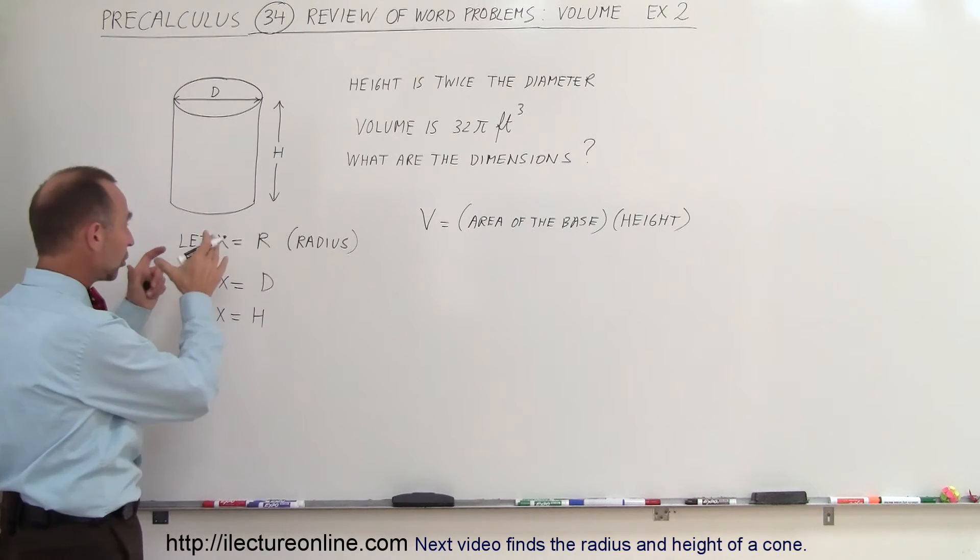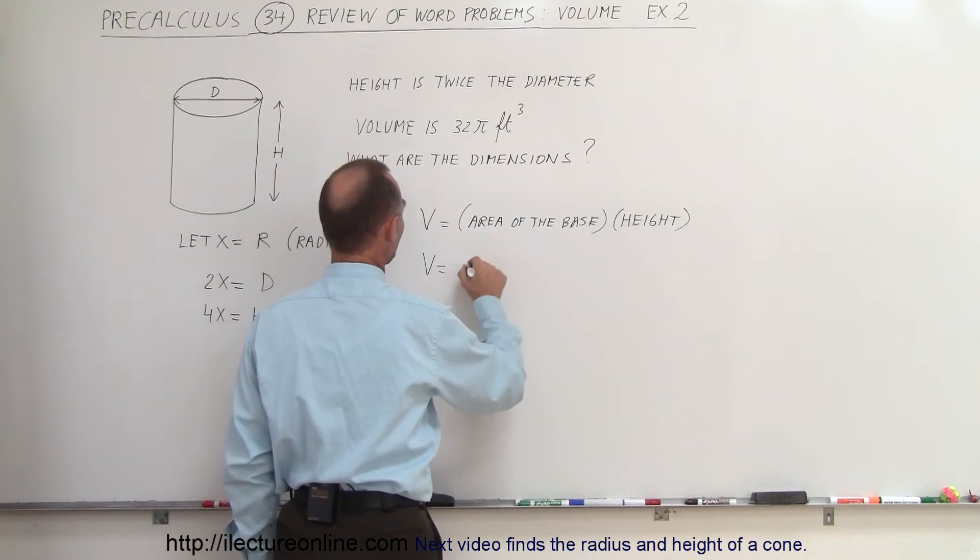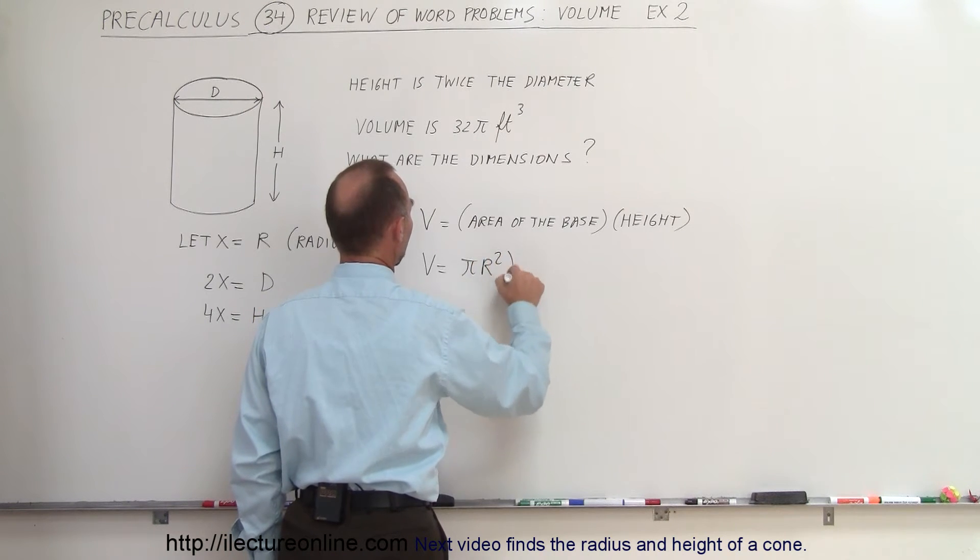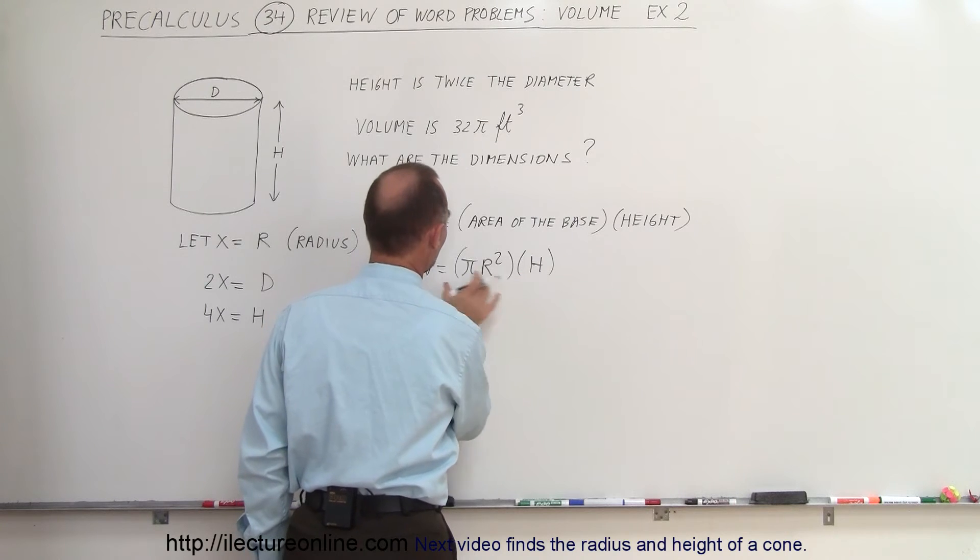The area of the base—you know that the base is a circle—so therefore area of the base is πr². So volume equals πr² and the height would be h.